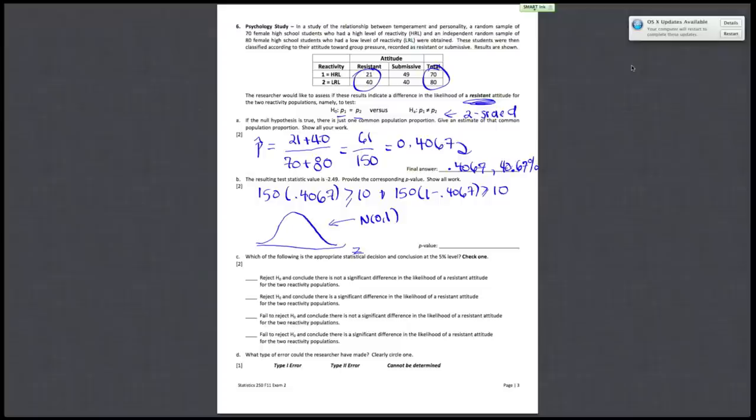And then, since your test is double-sided, since it's P1 doesn't equal P2, you're testing, you're wanting to find these two areas. So for the test statistic of 2.49 and negative 2.49.